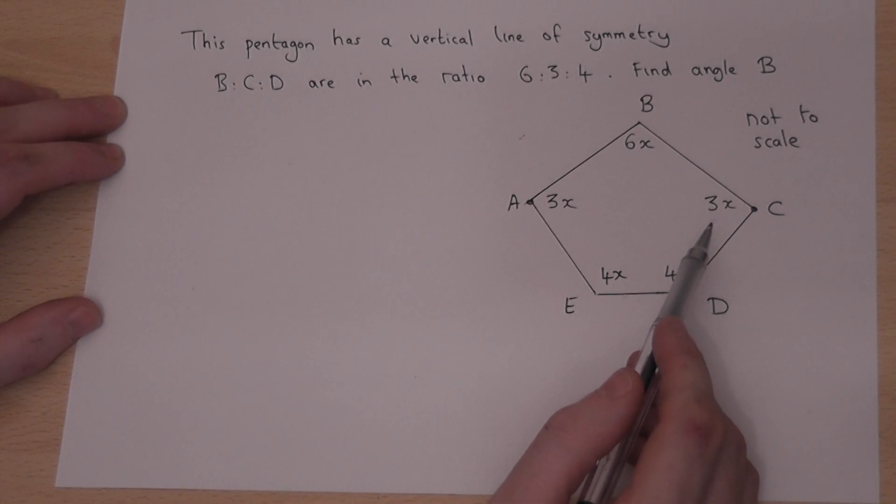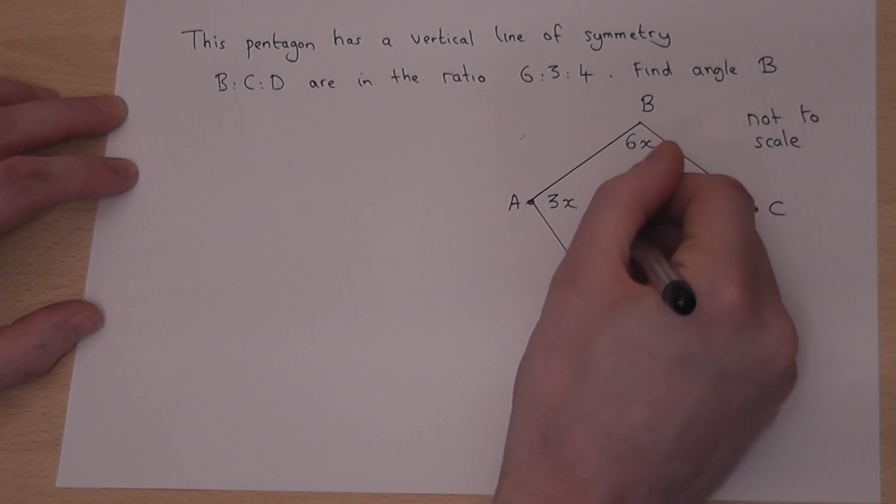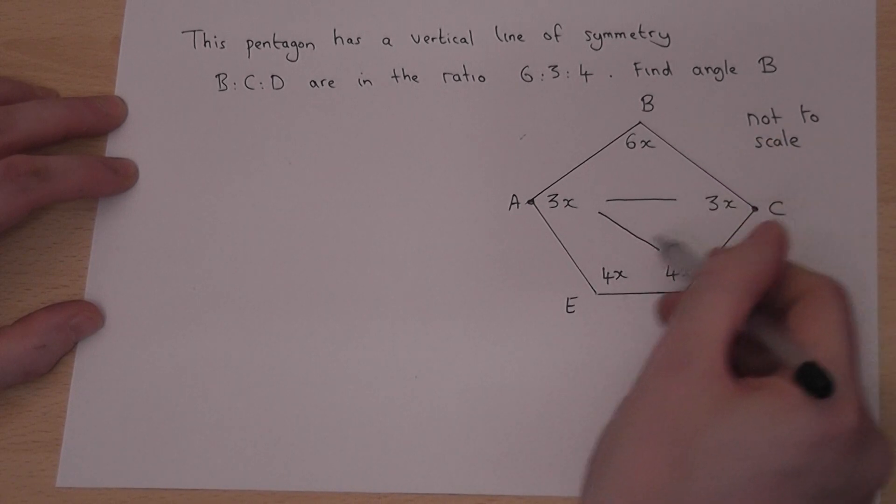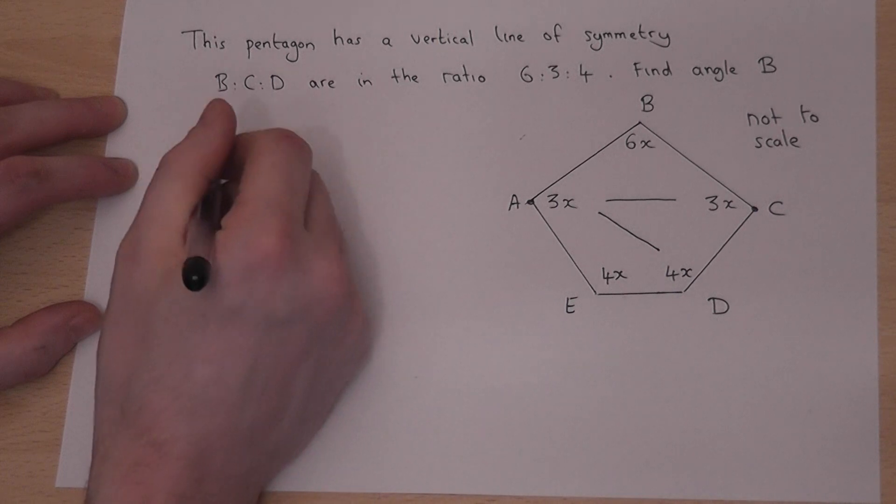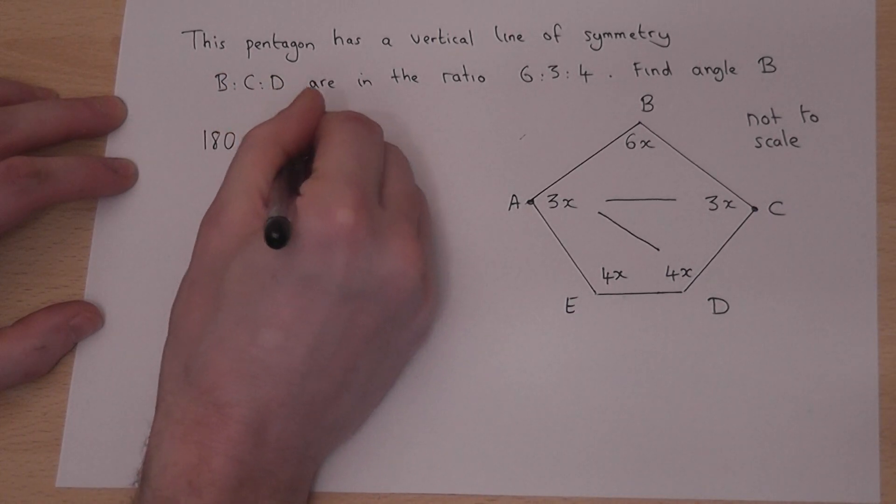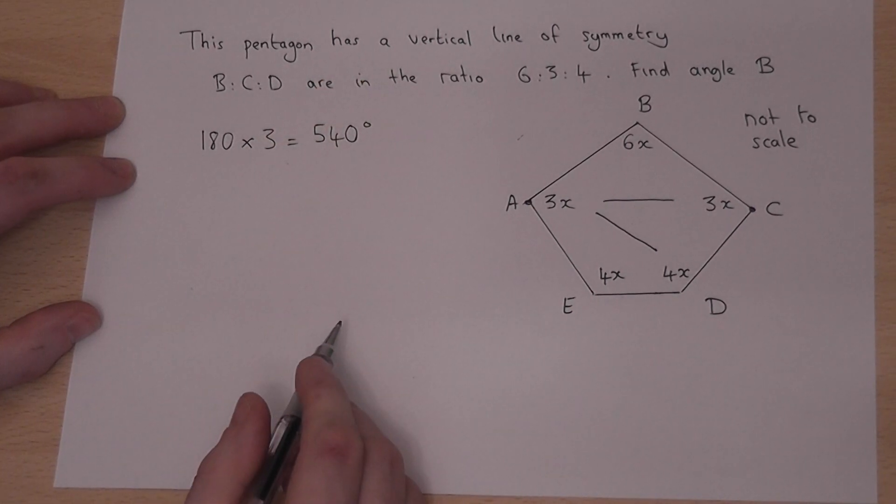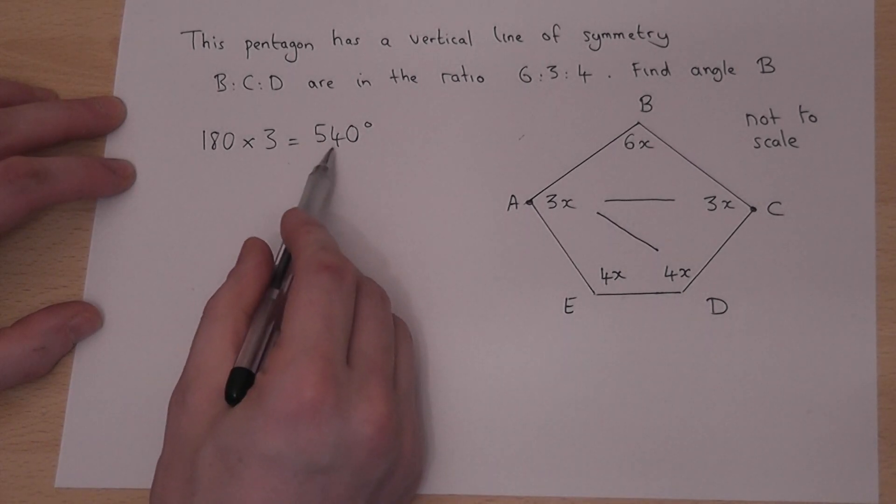To do this we find x. In a pentagon we know we can split the shape up into three triangles. So the total angles in a pentagon are 180 times 3 which is 540 degrees. The total angle inside a pentagon must equal 540 degrees.